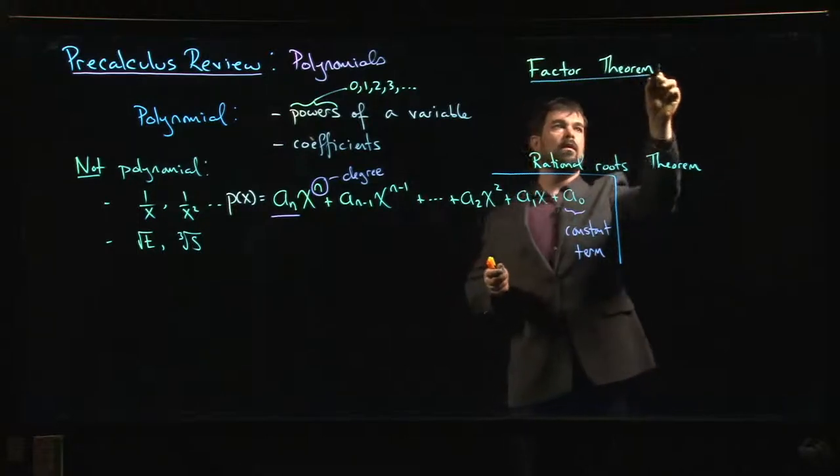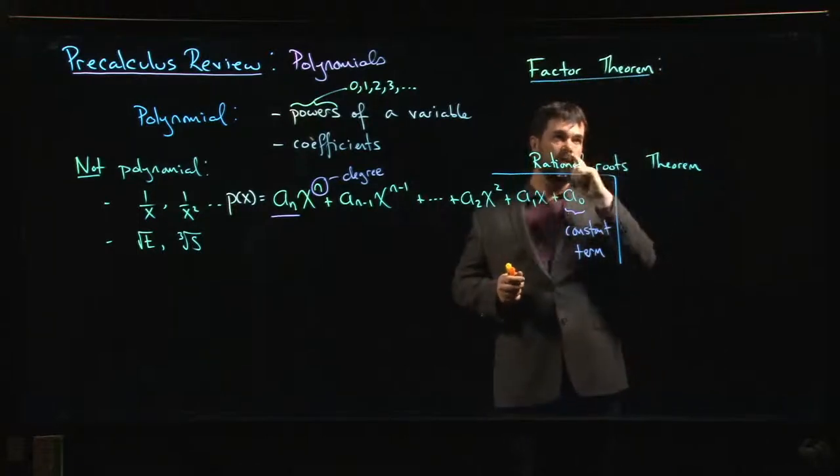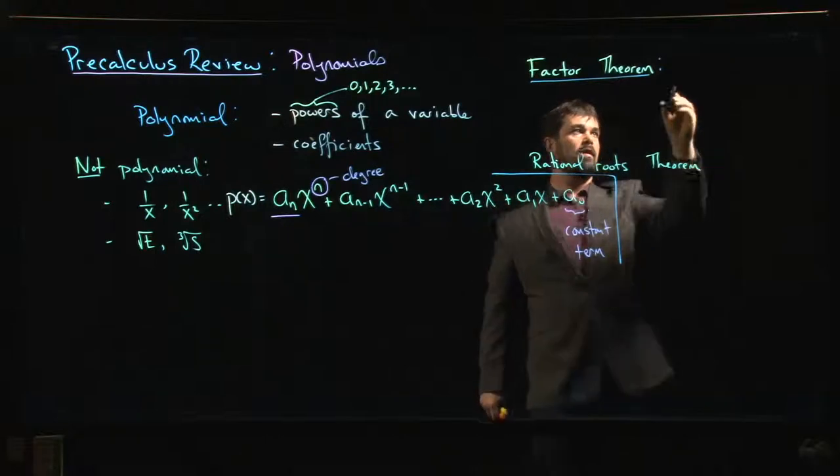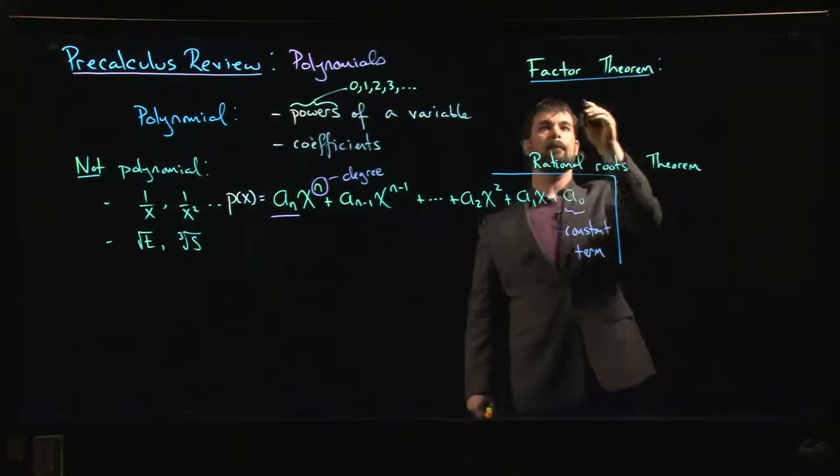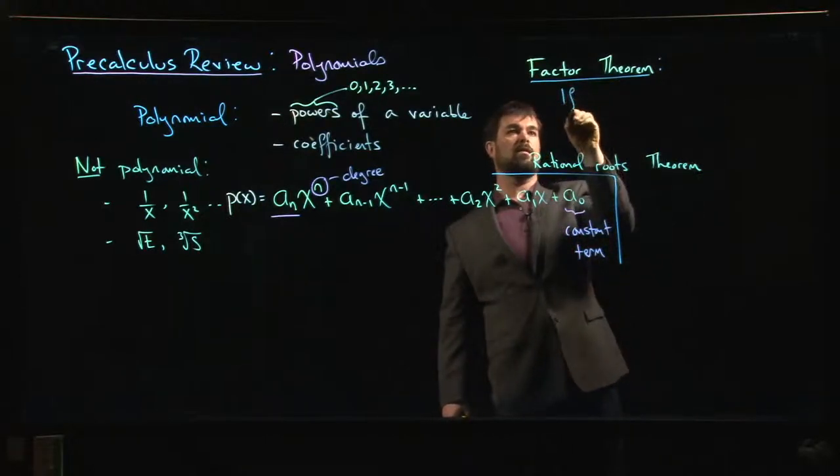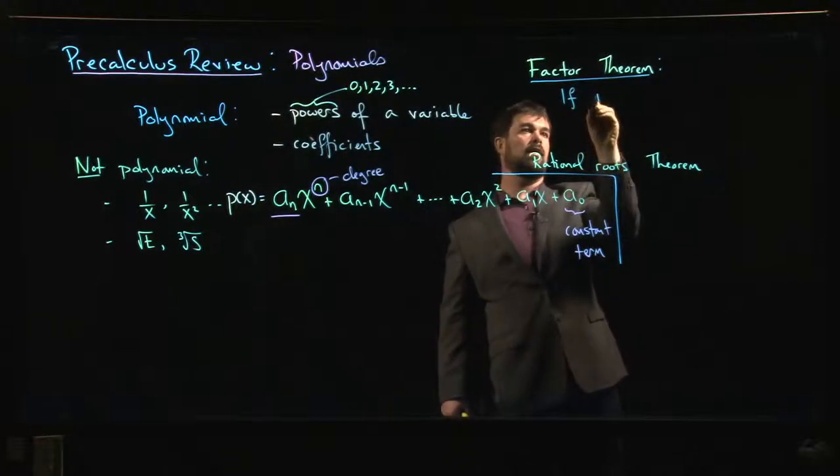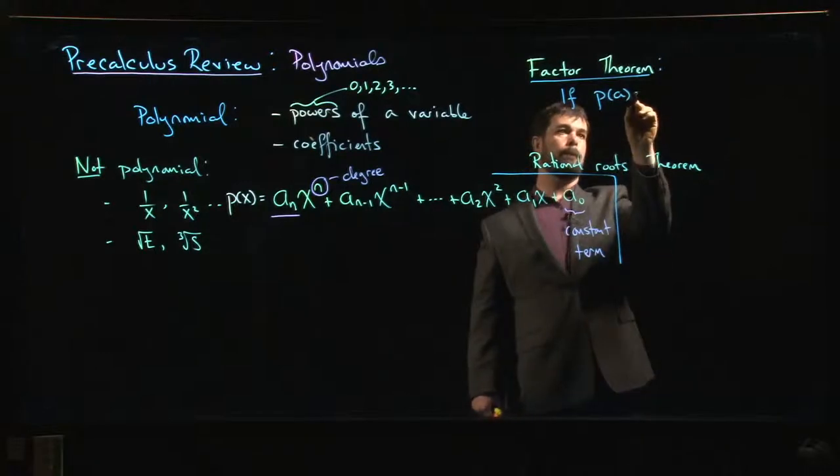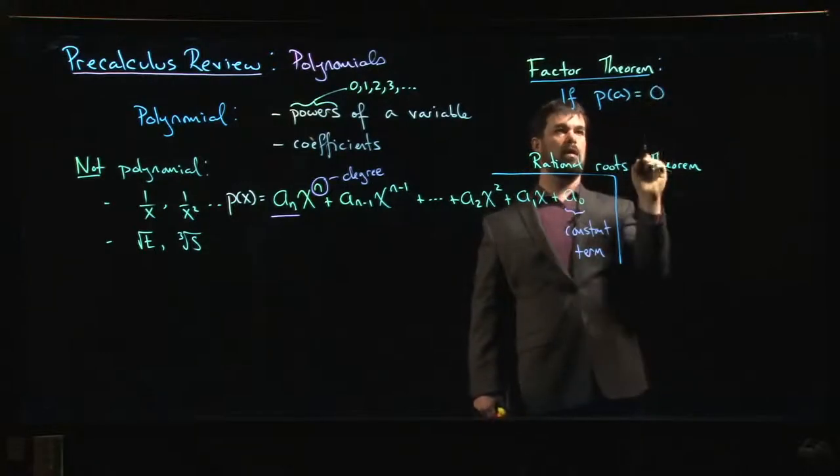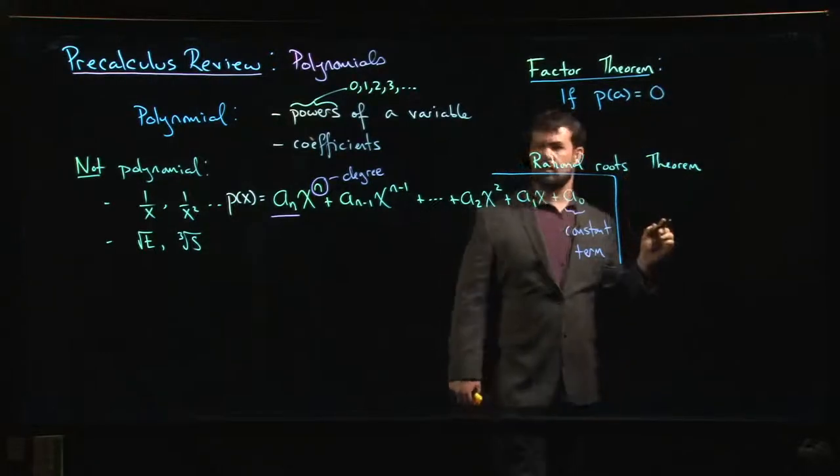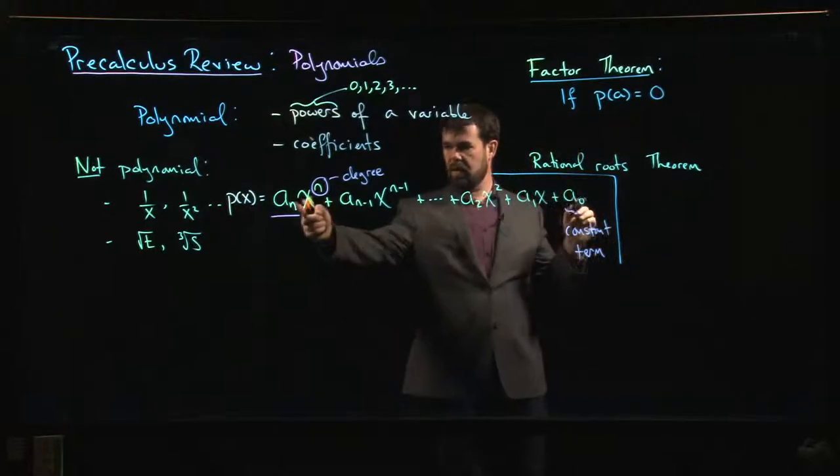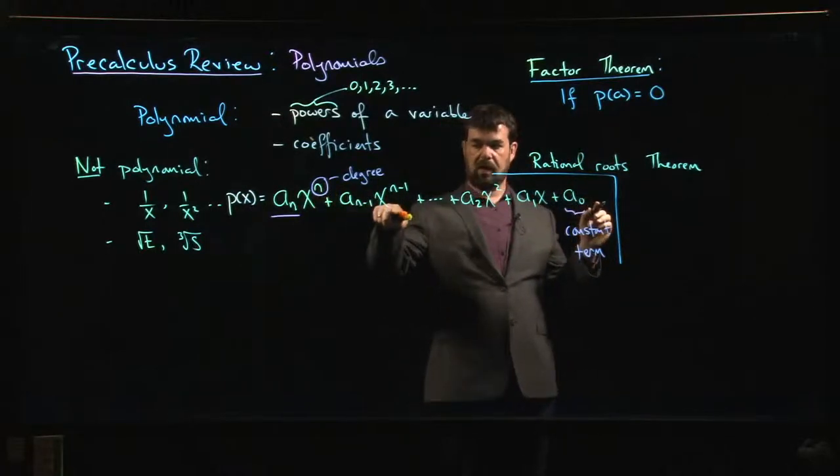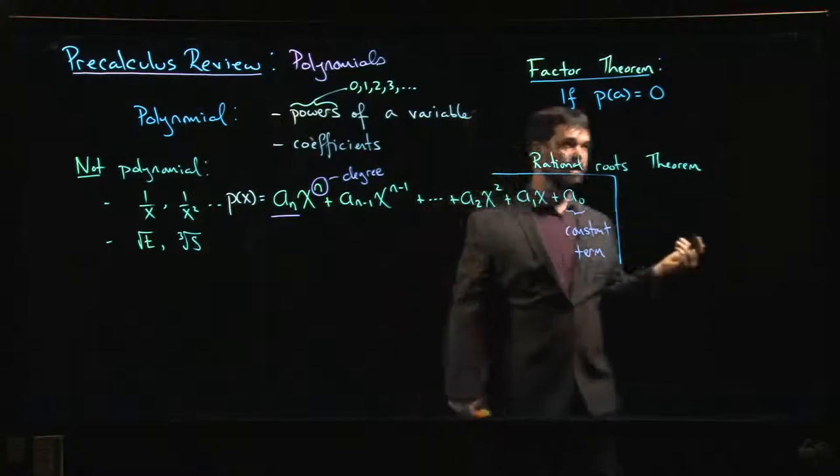First is the Factor Theorem. The Factor Theorem says the following: you take any number, any real number say a, and you plug it into your polynomial. If you get zero—so this means you're doing a_n times a to the n, a_(n-1) times a, you're plugging in this number—